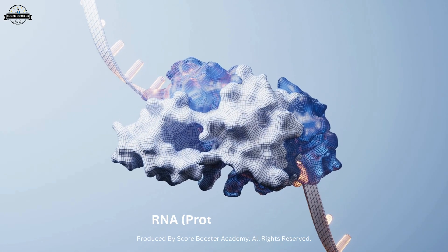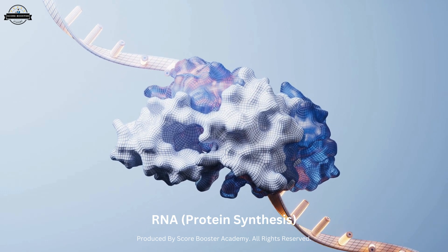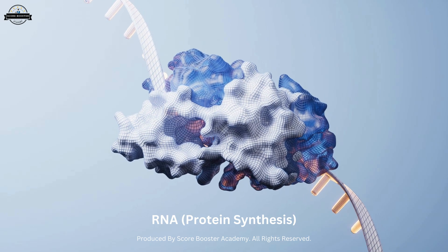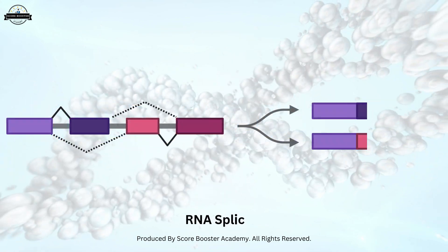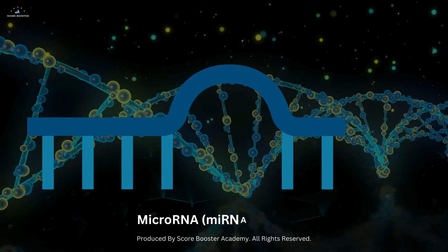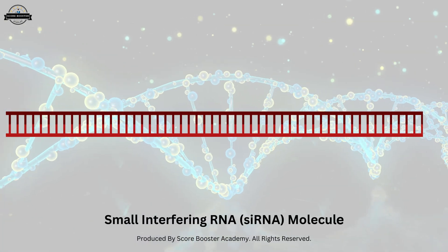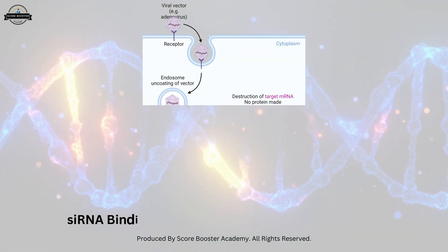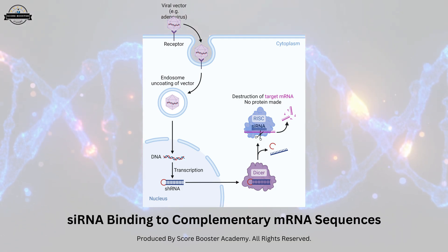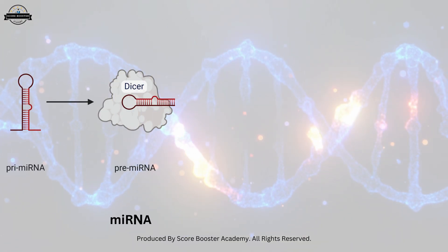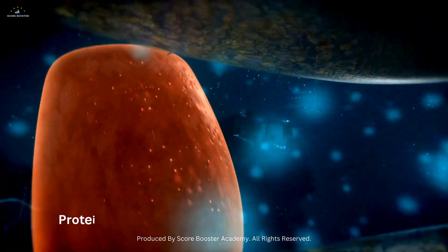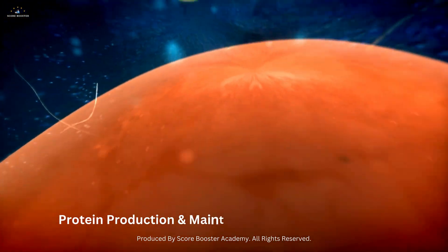While RNA's role in protein synthesis is paramount, its influence extends far beyond this fundamental process. RNA participates in various cellular functions, including gene regulation, RNA splicing, and catalysis. Certain types of RNA, like microRNA and small interfering RNA, regulate gene expression by binding to complementary mRNA sequences. Once bound, they can either inhibit translation or promote mRNA degradation. This process allows cells to fine-tune gene expression, controlling protein production and maintaining cellular homeostasis.